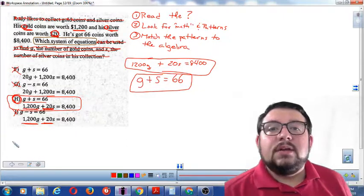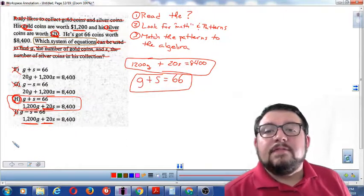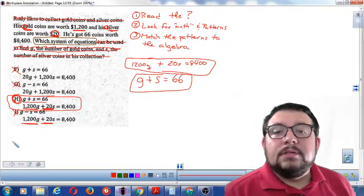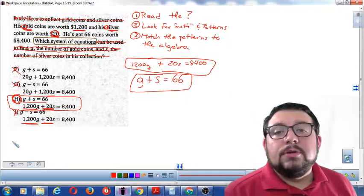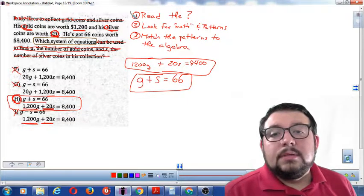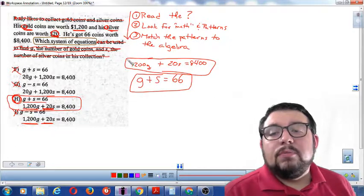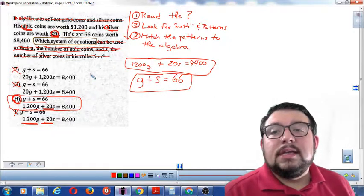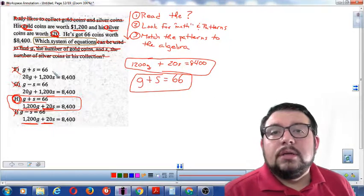Alright, so that's how you do these kinds of problems. You just get in there and find the math, find the patterns, and match the patterns to the algebra. So those are your three steps for solving word problems when you have to translate from English to mathematics.